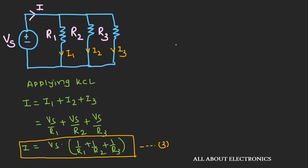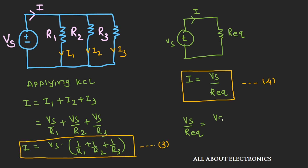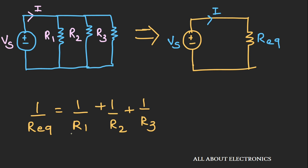Now, if we replace the three parallel resistors by their equivalent resistance — let's call that R equivalent — the circuit will have a voltage source Vs connected with that equivalent resistance, and the current supplied by the source I will remain the same. So for this circuit we can write I = Vs / R equivalent. Let's call this equation number 4. Comparing equations 3 and 4, we get Vs/R equivalent = Vs × (1/R1 + 1/R2 + 1/R3), so 1/R equivalent = 1/R1 + 1/R2 + 1/R3.